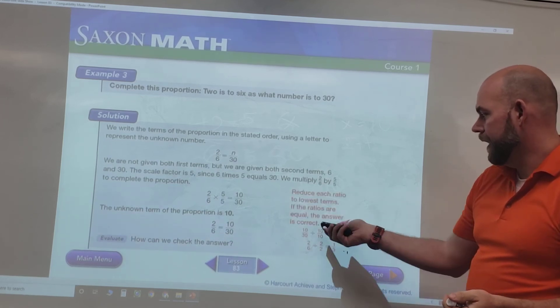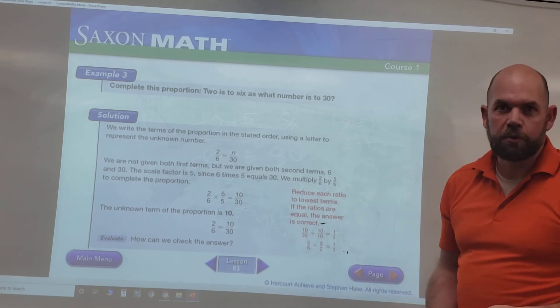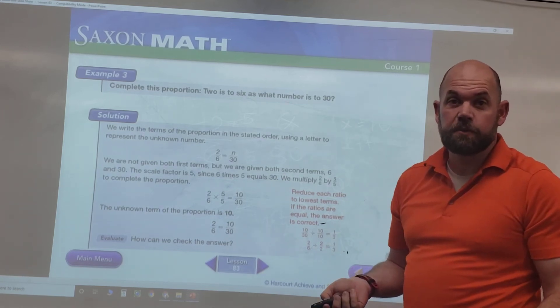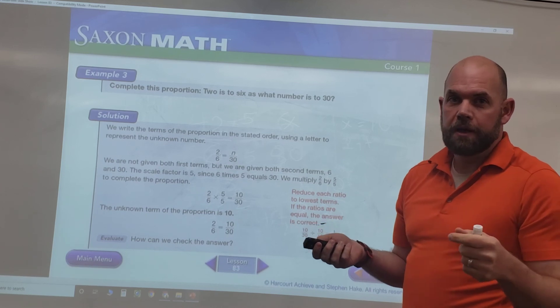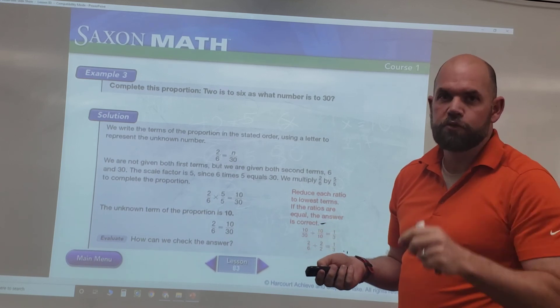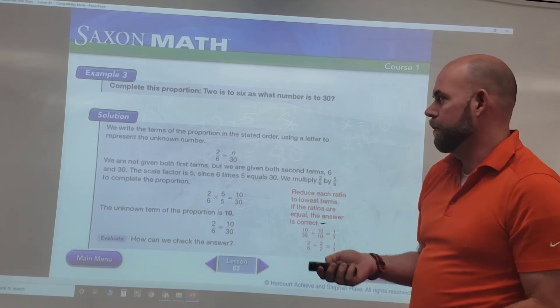Okay, and so again it's just saying reduce it to its lowest proportion - that way we can see if it's equal. If you take both of your proportions and reduce both of them, they should have the same answer.